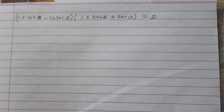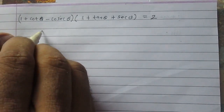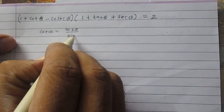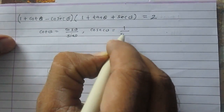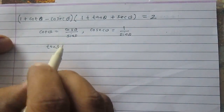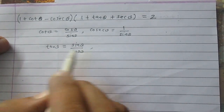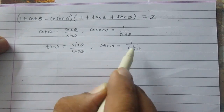We need to prove that (1 + cot θ - cosec θ) multiplied by (1 + tan θ + sec θ) is equal to 2. We know that cot θ = cos θ / sin θ, cosec θ = 1 / sin θ, tan θ = sin θ / cos θ, and sec θ = 1 / cos θ.